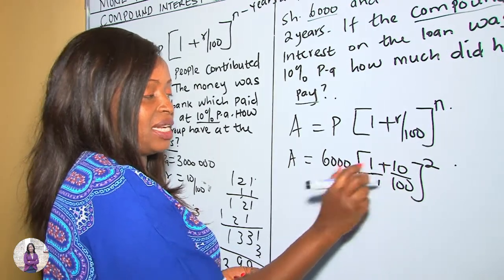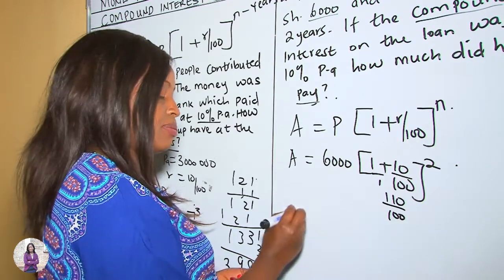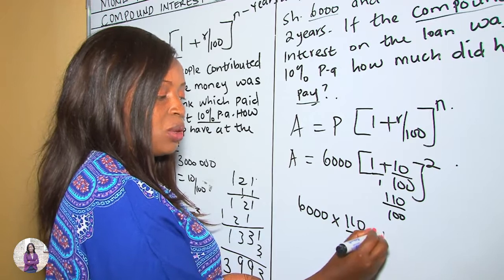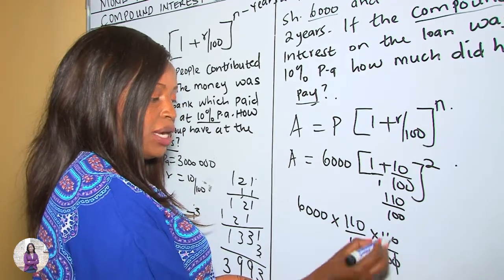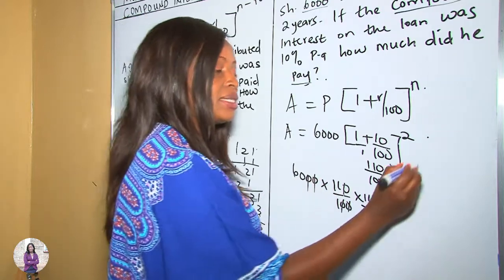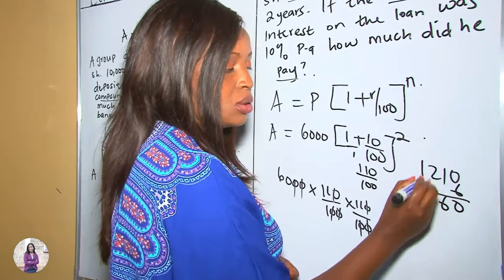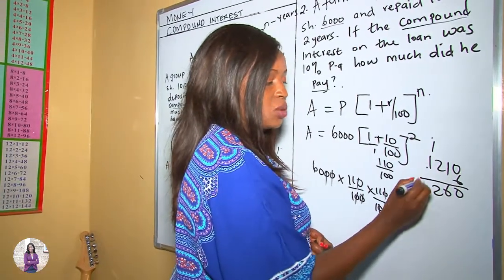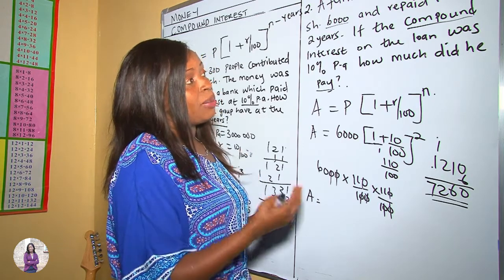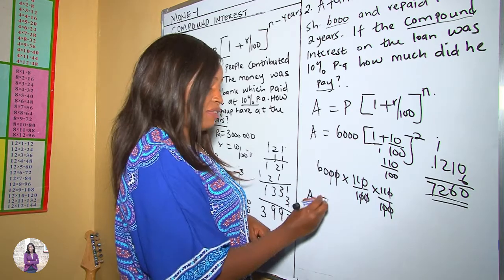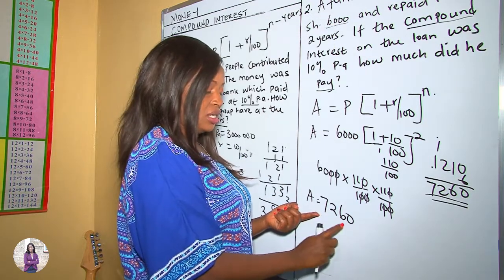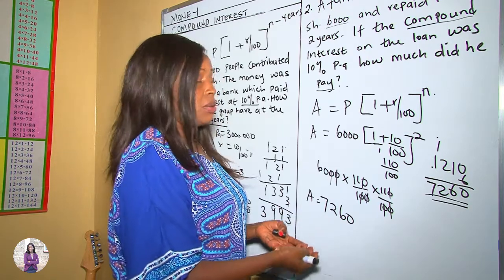Since n = 2, it is squared. The LCM gives us (100 + 10)/100 = 110/100. So: 6,000 × (110/100)^2 = 6,000 × (110/100) × (110/100). Cancelling zeros: 11 × 11 = 121, multiplied by 60 = 7,260. Therefore the farmer paid back a total of 7,260 shillings. She had borrowed 6,000, so the extra 1,260 is the compound interest.